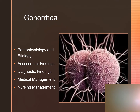Gonorrhea is the second most frequently reportable STI in the United States, and it also facilitates HIV transmission. These clients may have a skin rash, fever, and painful joints. Men may also experience urethritis with purulent discharge and dysuria. Many women may be asymptomatic; however, they may experience white or yellow vaginal discharge, intermenstrual bleeding, and dysuria.